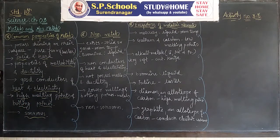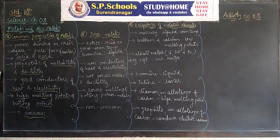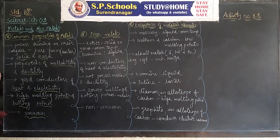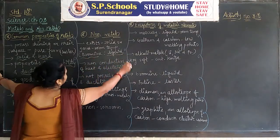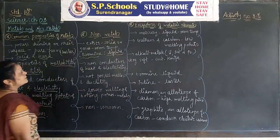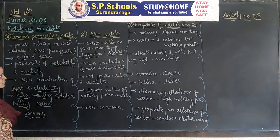Metals possess high melting points and boiling points, and metals are sonorous. In comparison, non-metals generally exist as solids or gases at room temperature. Exception: bromine is liquid at room temperature.